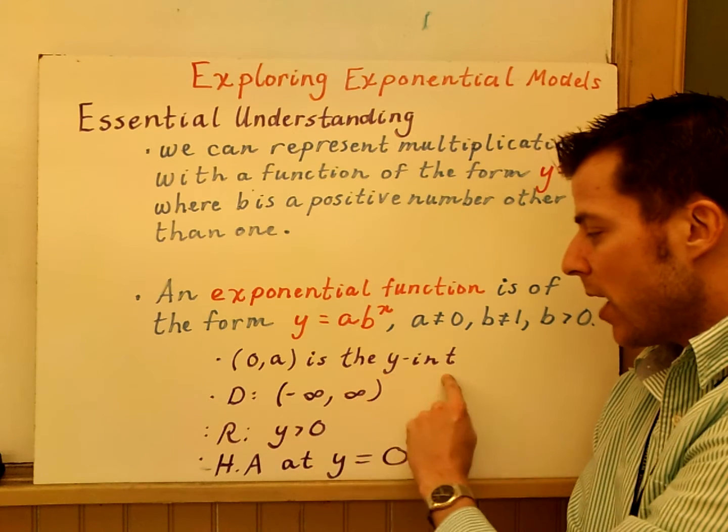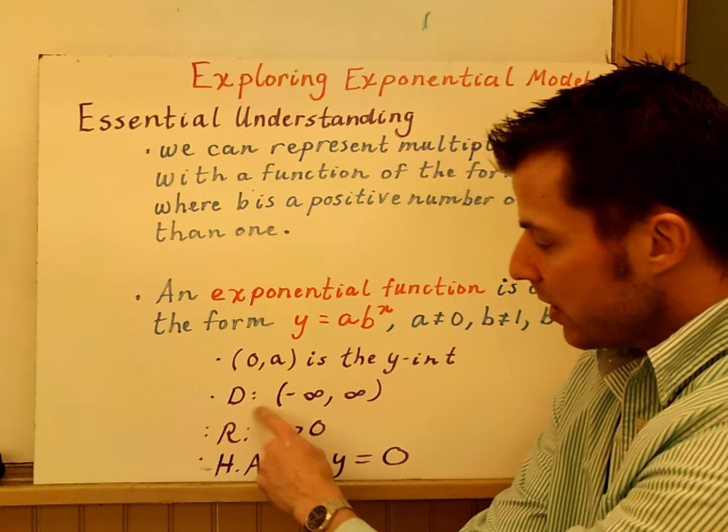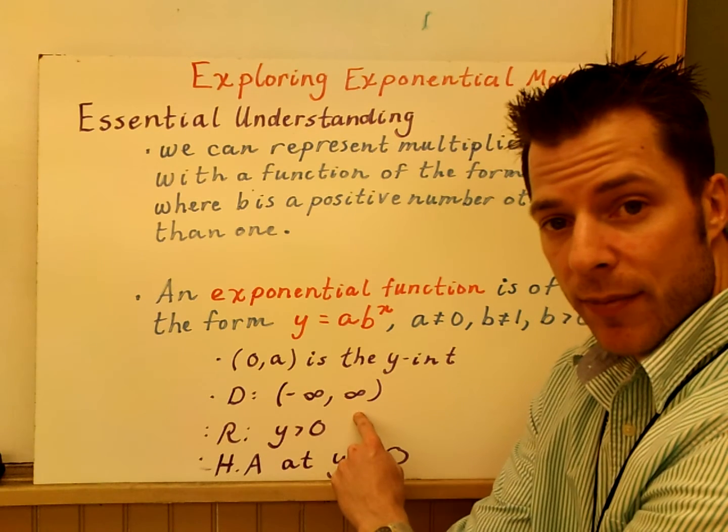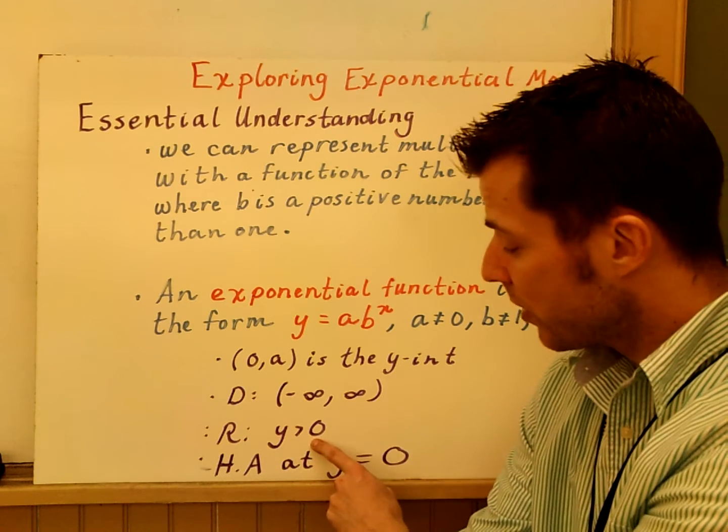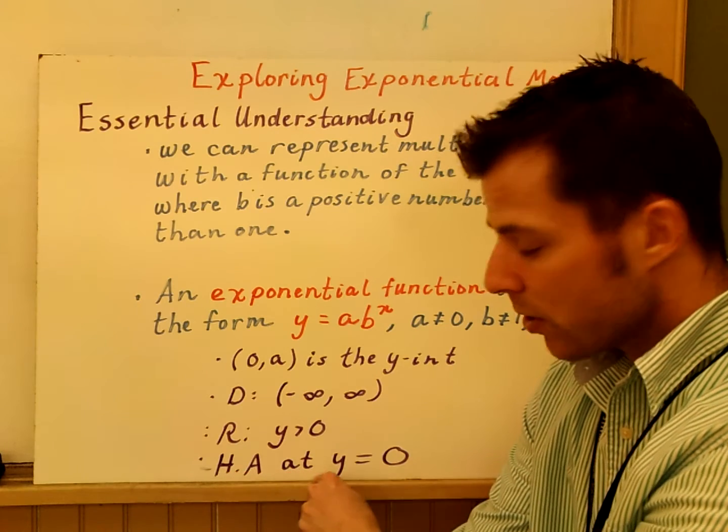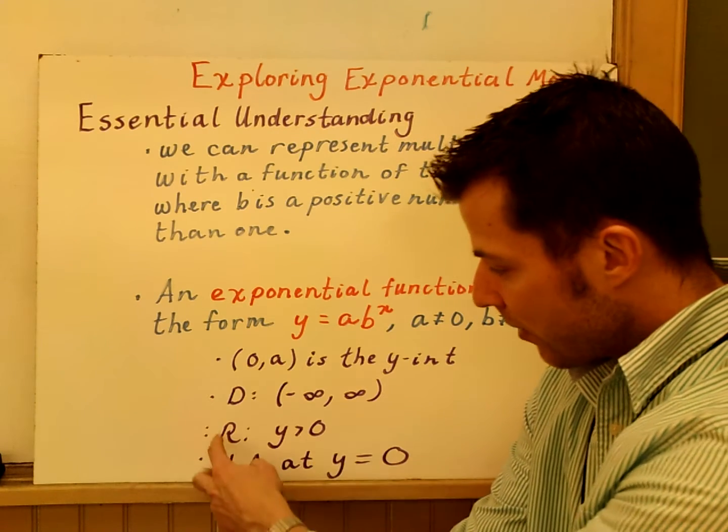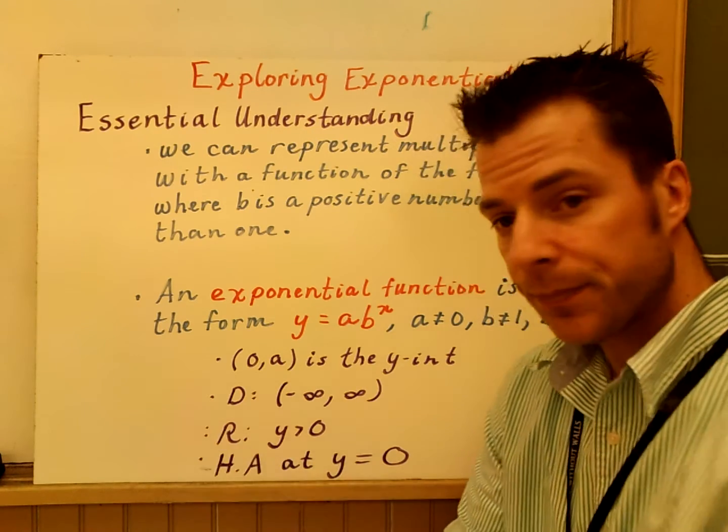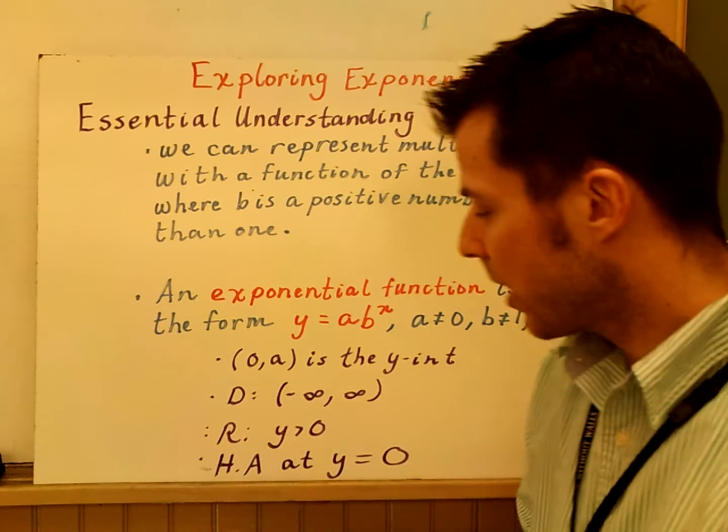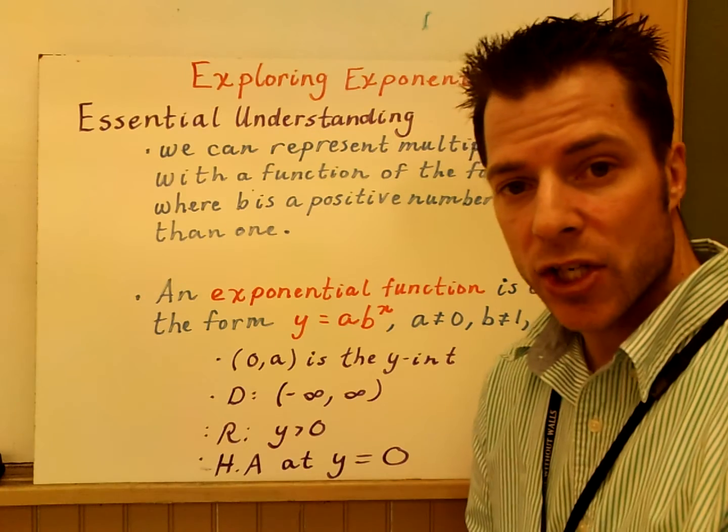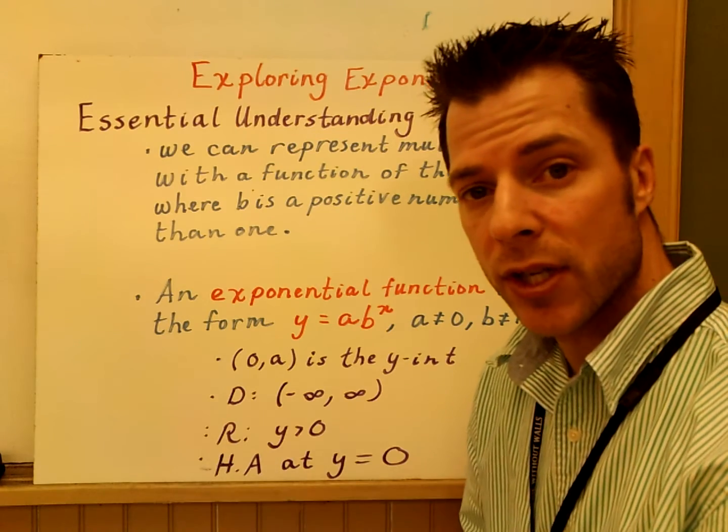a is going to be the y-intercept. The domain is going to be all real numbers for this type of exponential function. The range is going to be y is greater than 0, and the horizontal asymptote is going to be at y equals 0. Now, these bottom two can change depending on our parameters in the equation.